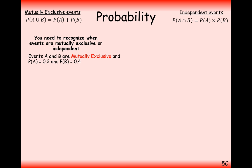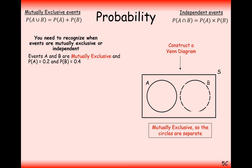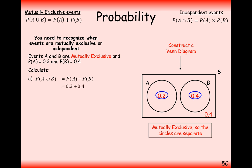Let's look at this in action. Events A and B are mutually exclusive, so we can use the addition rule. The probability of A is 0.2 and the probability of B is 0.4. The Venn diagram shows these as separate circles with 0.2 and 0.4, and the remainder 0.4 at the bottom to make the total add up to 1. The probability of A or B is simply 0.2 + 0.4 = 0.6.